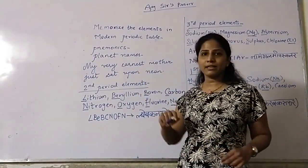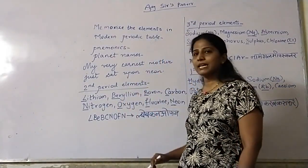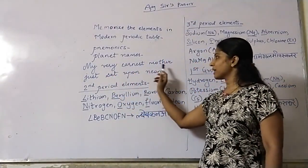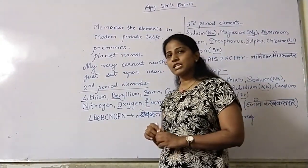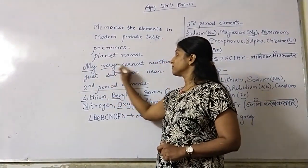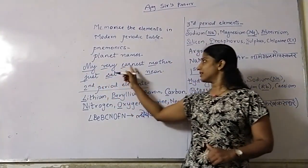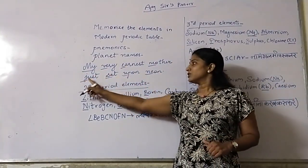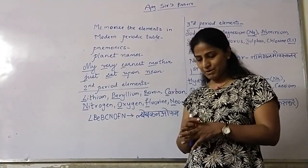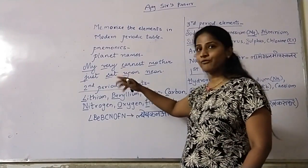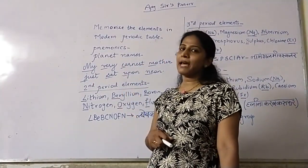If we have to remember the names of the planets, we learn the sentence: 'My very earnest mother just sat upon Neon.' The first letter of each word gives us the planet names — Mercury, Venus, Earth, Mars, Jupiter, Saturn, Uranus, Neptune. This sentence was taught in childhood to help us remember the planet names, with the initials matching each planet.